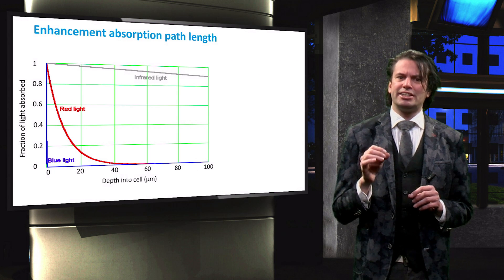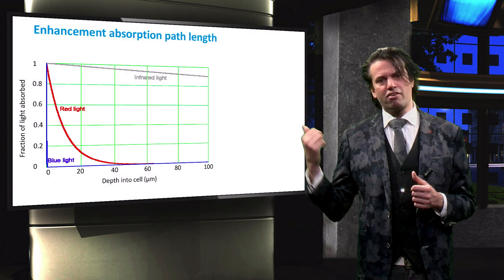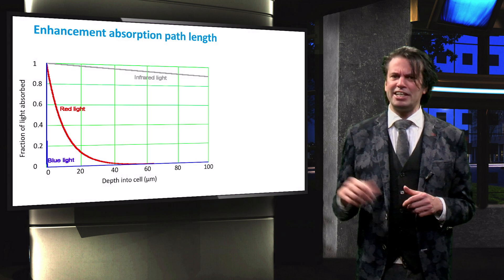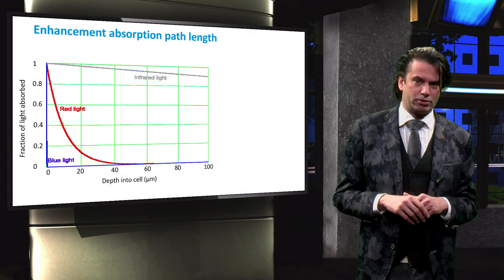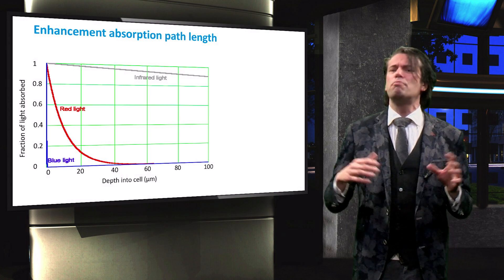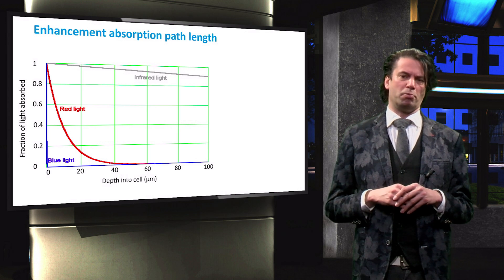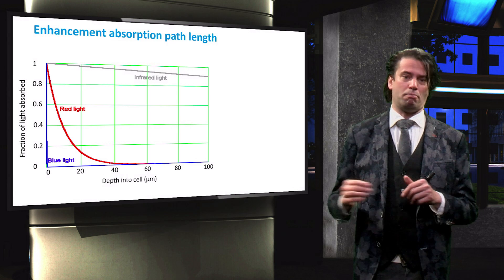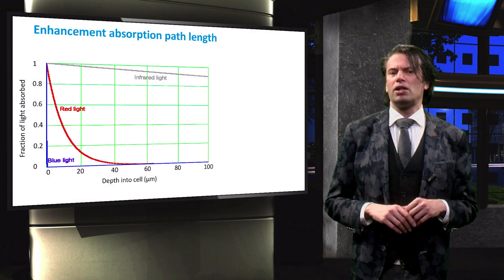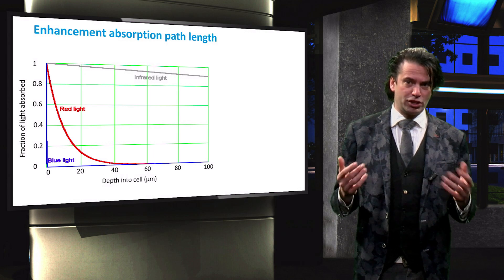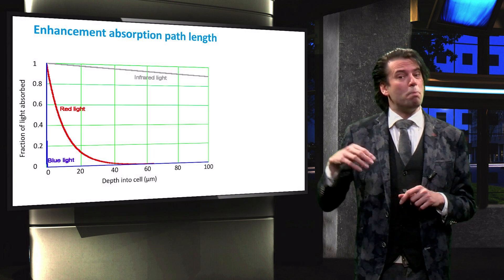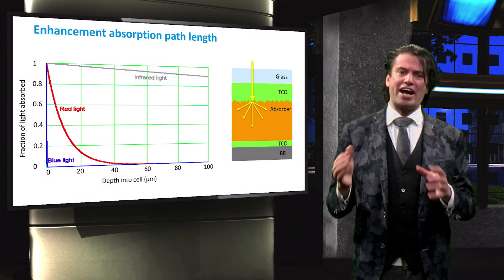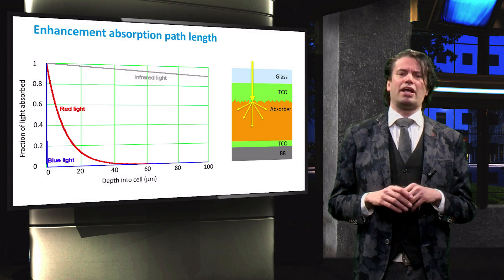The second function of scattering in solar cells is enhancement of the absorption path length. This graph shows the absorption of blue, red, and infrared light as a function of penetration depth. Blue light is already fully absorbed in the first micrometers. Red light, however, has photon energy just slightly above the band gap and therefore much lower absorption probability. For red light to be fully absorbed, the path length through the absorber material should be over 60 micrometers. As the thickness of the absorber layer in thin film solar cells, based on for instance amorphous silicon, generally ranges from 0.2 to about 2 microns, much of the light is not absorbed. Scattering is therefore used to refract light into large angles to increase the absorption path length of the incident photons.